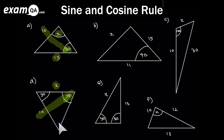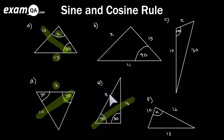For triangle E: two angles are present, so we're thinking sine rule. We have a full section and we're trying to work out a side. We have the corresponding angle to that side known, giving us a half section — perfect for scenario one of the sine rule. For triangle F: one angle is involved, so we're thinking cosine rule. All three sides are known, so we can use the cosine rule — and it's scenario two.